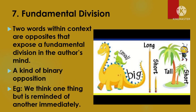The seventh and last type of ambiguity is when two words within context are opposites that expose a fundamental division in the author's mind — also called binary opposition. For example, when we think about 'tall,' the image of 'short' immediately comes to mind; when we think about 'poor,' 'rich' comes to mind. One concept associated with another immediately arises, making a fundamental division — or in Empson's words, a confusion or ambiguity.